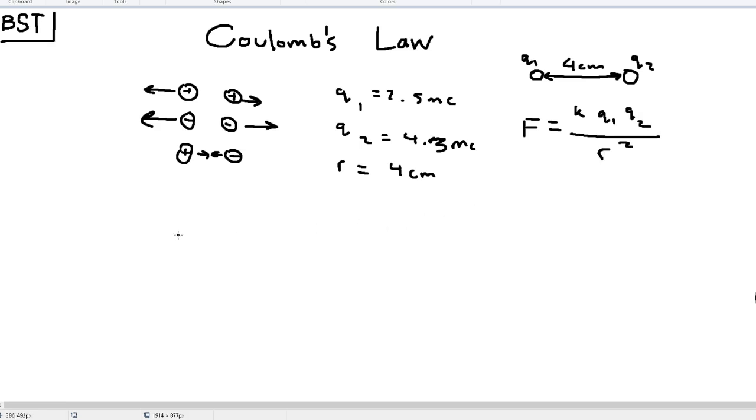K, which is Coulomb's constant, is 9 times 10 to the 9th. And as I said earlier, this is measured in newton meters squared per coulomb squared.